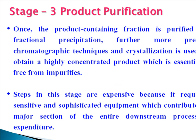Stage 3 is product purification. Once the product-containing fraction is purified by fractional precipitation, further precise chromatographic techniques and crystallization are used to obtain a highly concentrated product which is essentially free from impurities. Steps in this stage are expensive because they require sensitive and sophisticated equipment, which contributes a major section of the entire downstream processing expenditure.